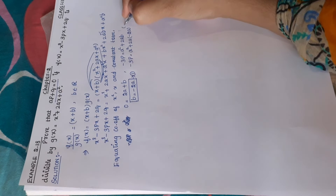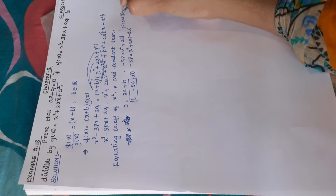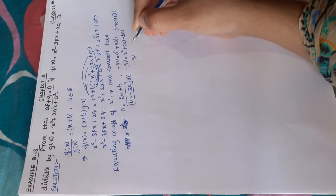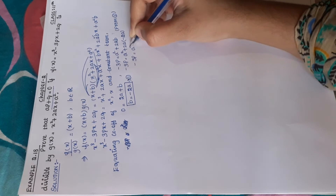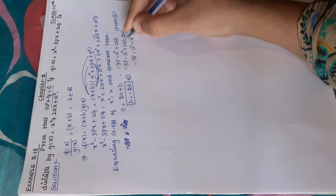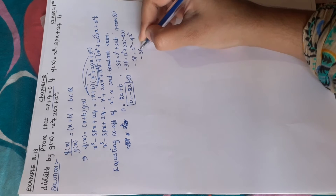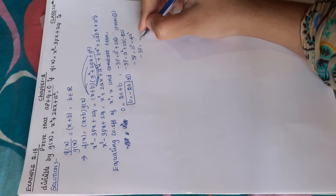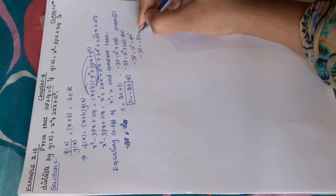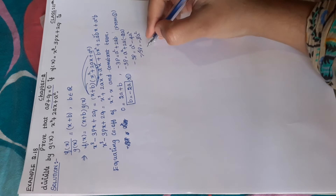From equation 1, b equals minus 2a. So minus 3p equals a square plus 2a into minus 2a, which is a square minus 4a square, giving minus 3p equals minus 3a square. Dividing both sides by minus 3, p equals a square.